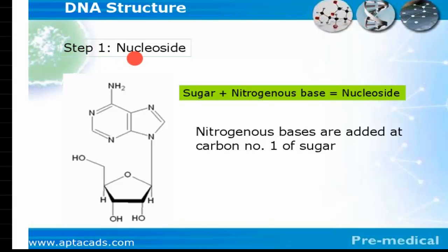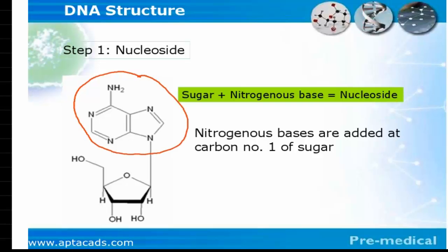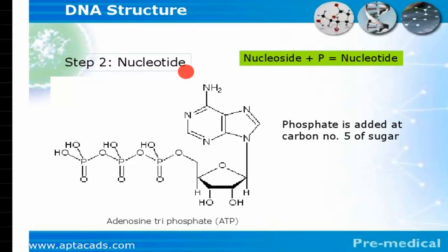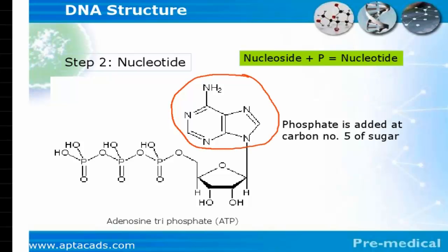Now let's discuss how these three molecules join together to form a DNA molecule. The first step is the formation of a nucleoside: sugar binds with a nitrogenous base to form a nucleoside, with the nitrogenous base binding at carbon number one of the sugar. In step two, a nucleotide is formed when one nucleoside binds with a phosphate group. The binding is specific — the nitrogenous base is bound to carbon number one, but the phosphate group is bound to carbon number five.